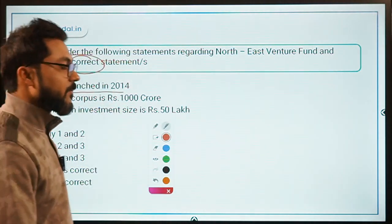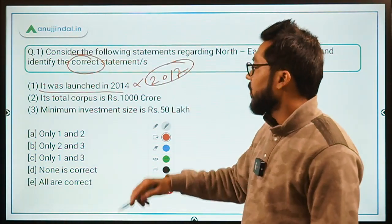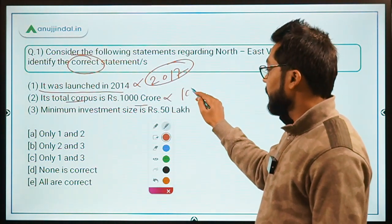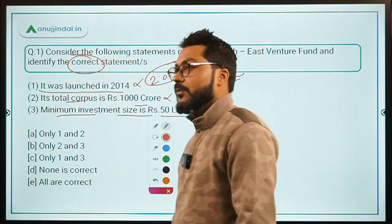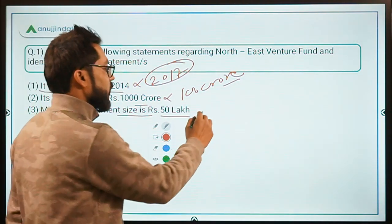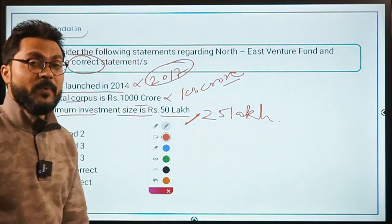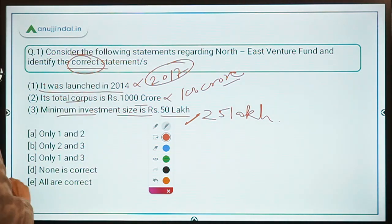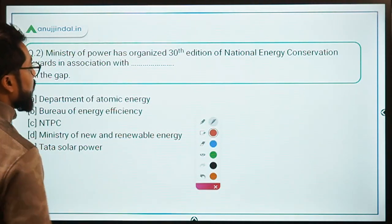Statement one says it was launched in 2014 — incorrect, it was launched in 2017. Statement two says the total corpus is rupees 1000 crores — incorrect, it is 100 crores. Statement three says the minimum investment size is rupees 50 lakh — incorrect, it is 25 lakh, with the maximum being rupees 10 crores. Since all statements are incorrect, the correct answer is option D: none is correct. Now let's move on to question number two.